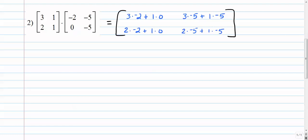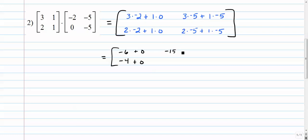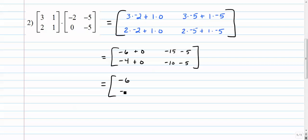Simplifying: 3 times negative 2 is negative 6 plus 0. 3 times negative 5 plus 1 times negative 5. 2 times negative 2 is negative 4 plus 0. Simplifying one more time: negative 6, negative 4, negative 20, negative 15. So the product of these two matrices is this matrix.